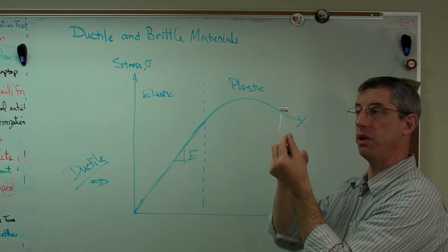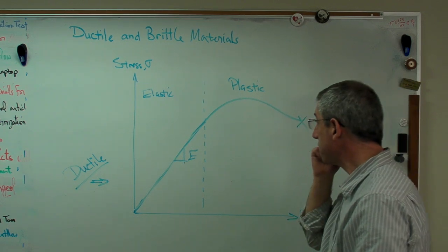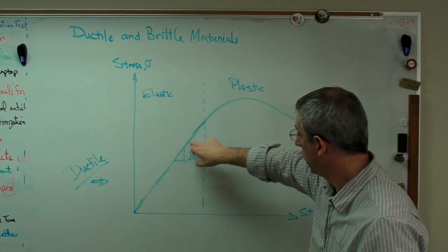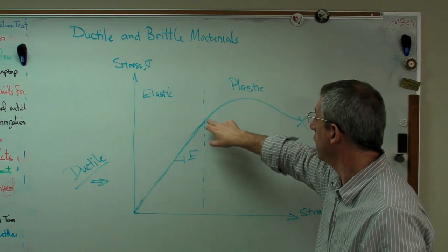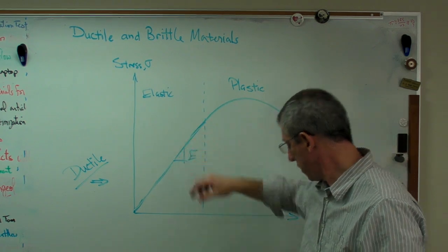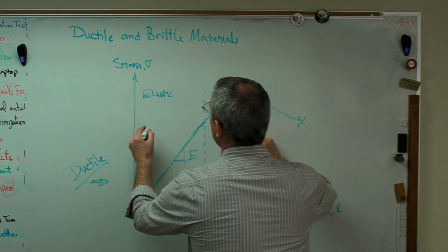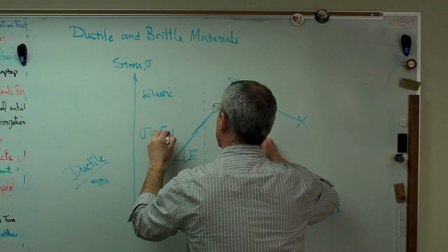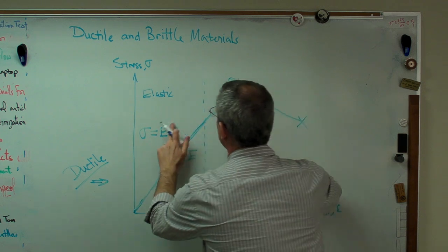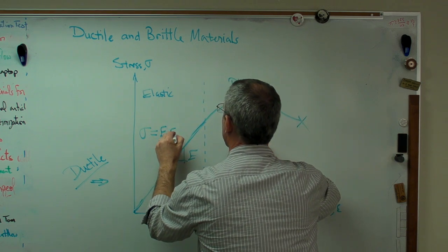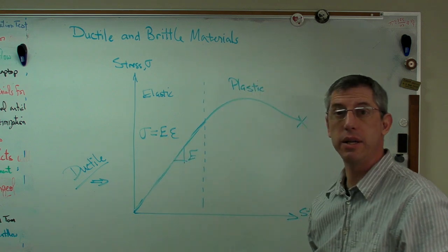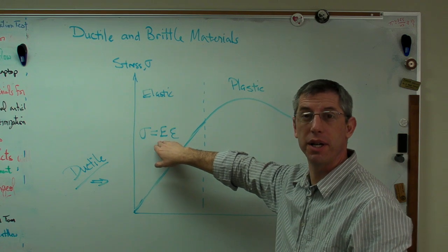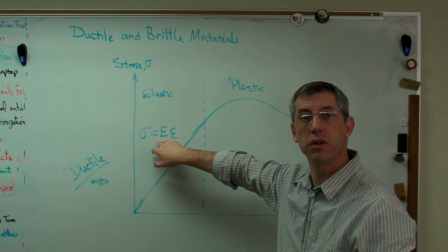Now this is a ductile material. It behaves linearly, this is a straight line, then it goes through this nonlinear region. In this region Hooke's law applies. Stress equals E times strain. In this region this very simple law applies. We tend to do most of our calculations assuming elastic deformation because this relationship is so simple.